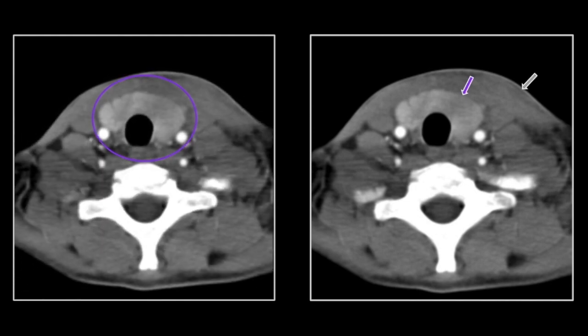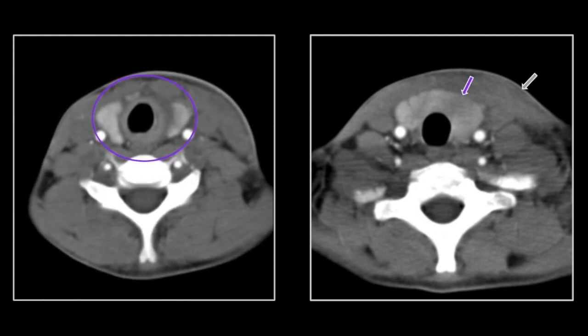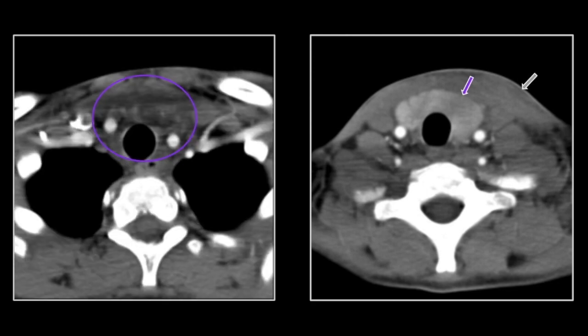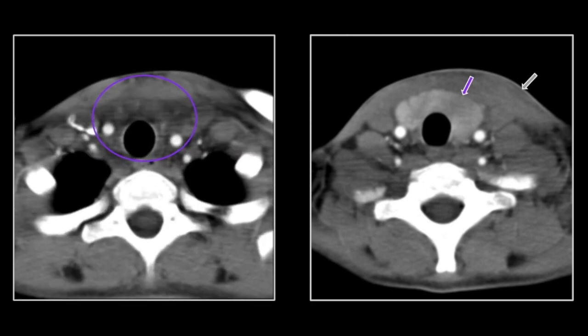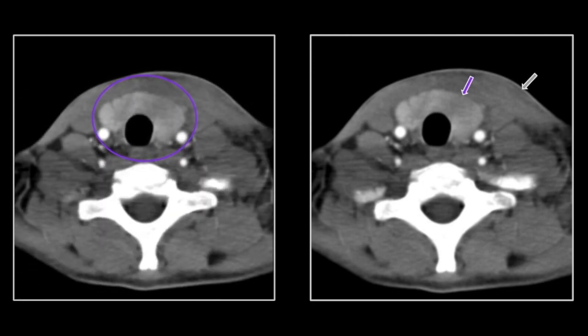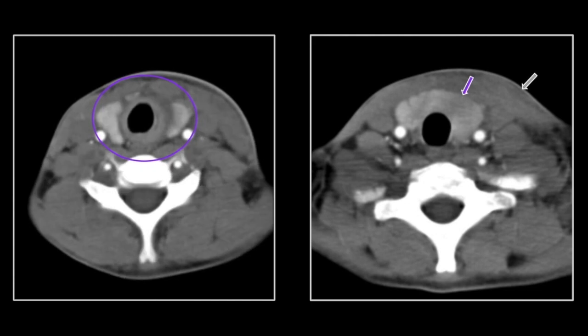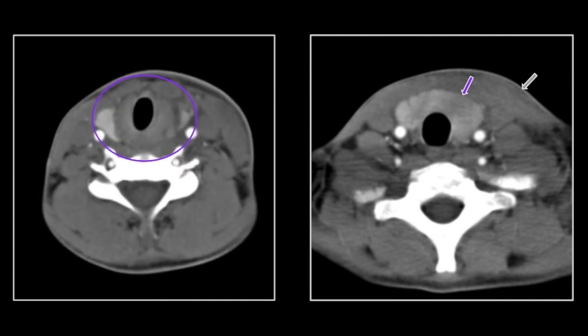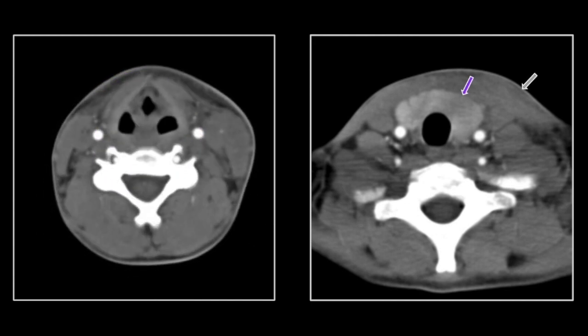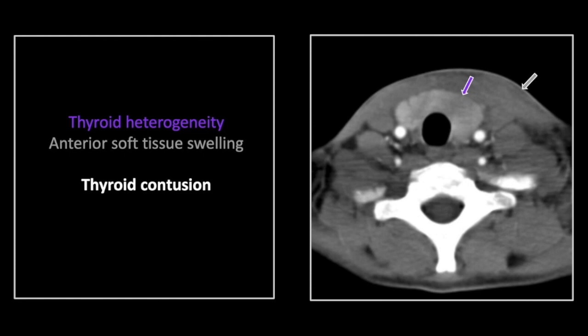There is diffuse enlargement of the thyroid. Note again that irregular, ill-defined hypodense region consistent with a contusion. So that is a thyroid contusion resulting from a direct blow. This patient was riding a dirt bike and hit a clothesline.